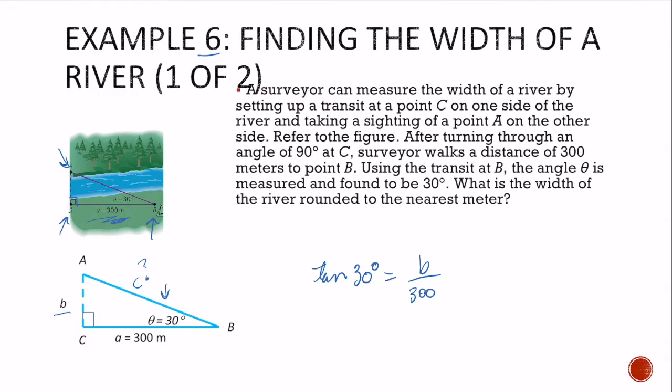So b equals 300 times tan of 30 degrees, which is about 173.2 meters. So let's go ahead and round this up to 173 meters. Let's take a look at another example.